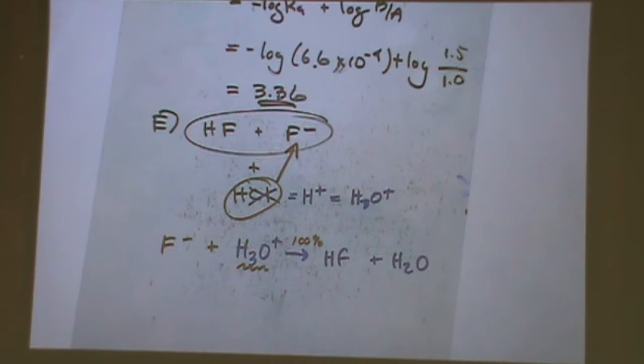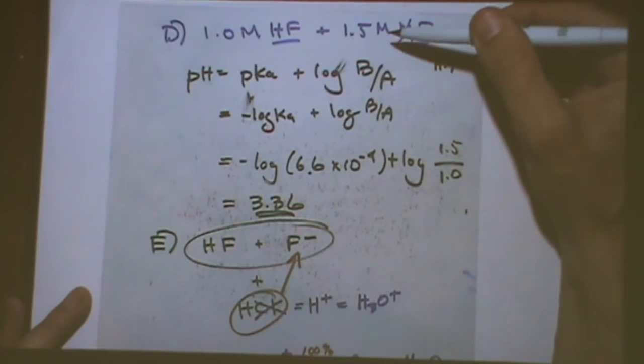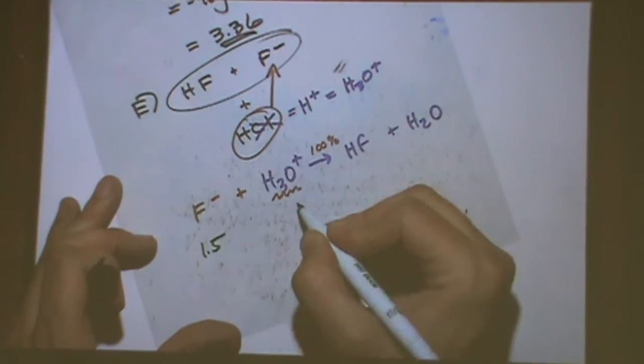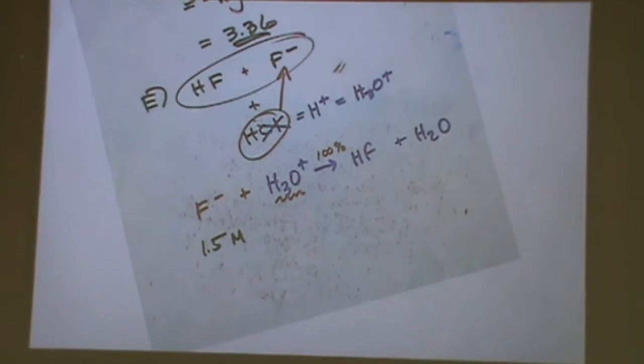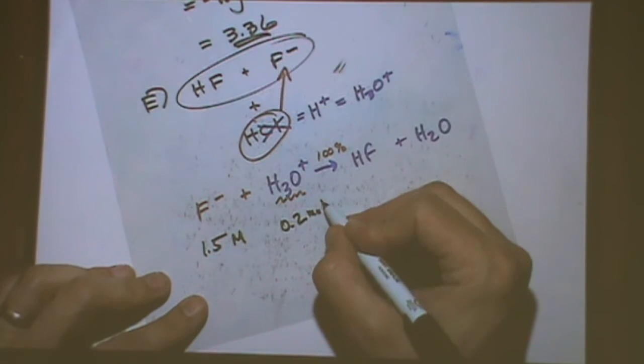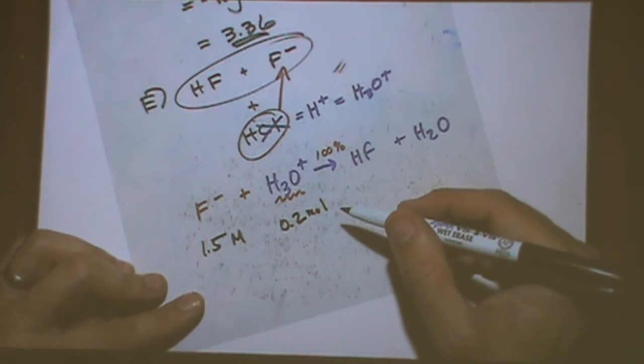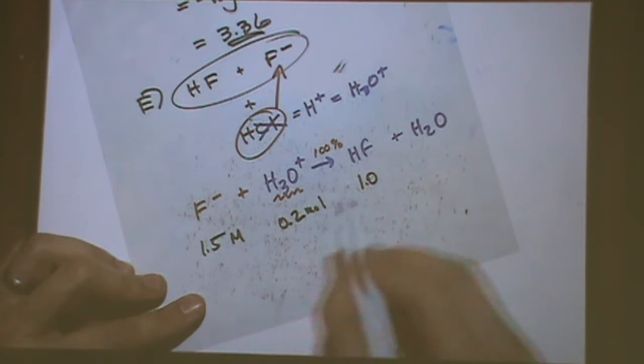A strong in the reactants makes it go forward a hundred percent. So K is large or small for this reaction? Large. Because it goes forward. What's favored? Products or reactants? Products. Yeah. Okay. So now you write the numbers underneath. F minus was up here 1.5 from the previous part of the problem. H3O plus. What was that number? And this is molar. H3O plus was 0.2. That's given in the problem. That's in units of moles. HF was 1.0. That's given in the question.